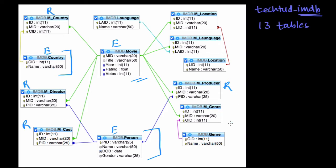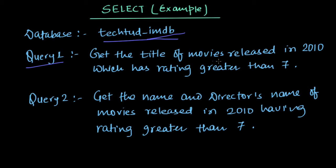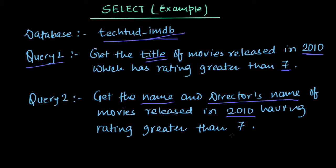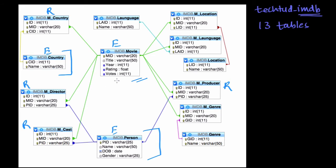Let's look at our queries now. The first query is: get the title of movies released in 2010 which have a rating greater than 7. The condition is the movie should have been released in 2010 and have a rating greater than 7, and we display the title. The second query is: get the movie name and director's name for movies released in 2010 with a rating greater than 7.